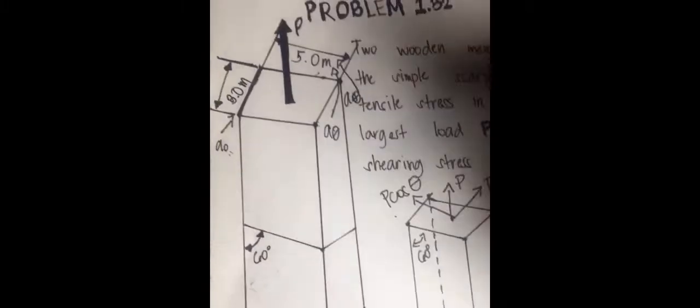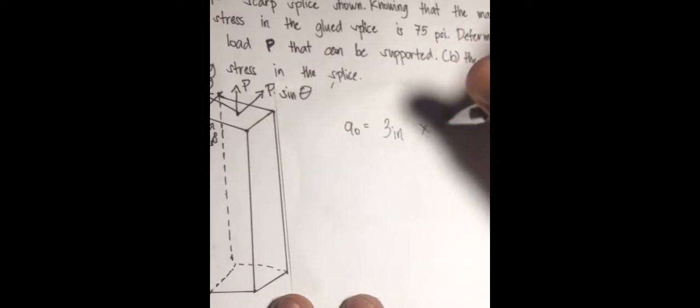So, when we have that, we know that A naught is equal to 3 inches, which is the, because it is length times width, so 3 inches right here, and the width, which is 5 inches. A naught is equal to 15 inches squared. So, in this case, this is A theta right here, and this right here is the A naught.